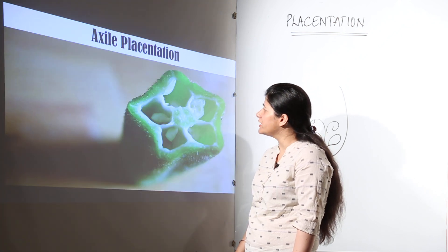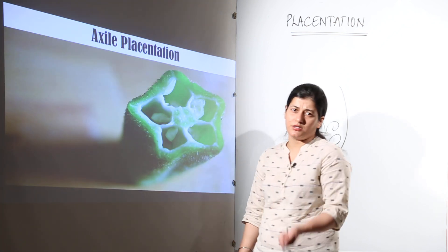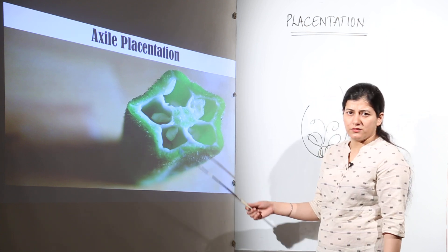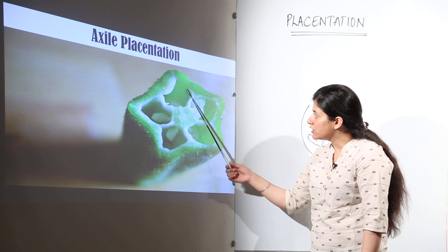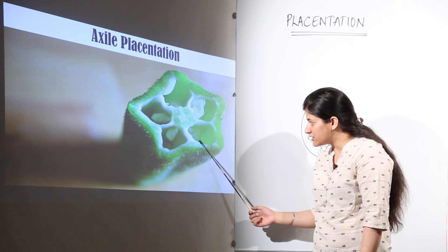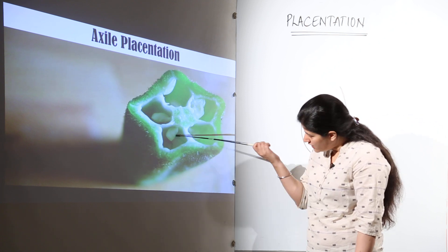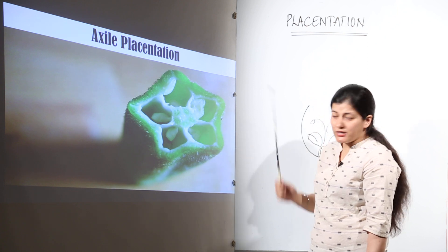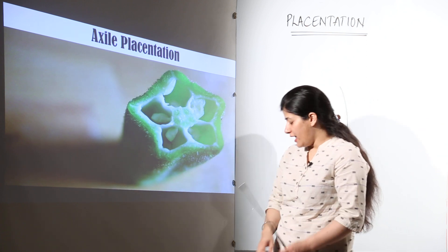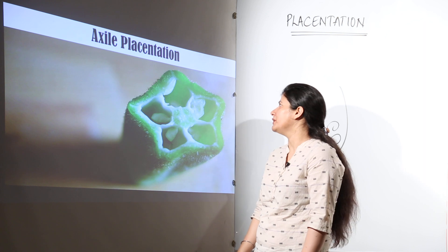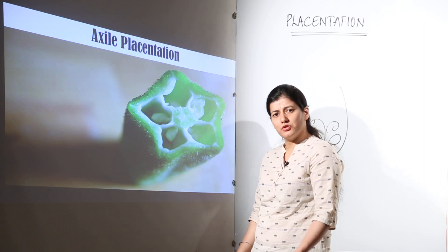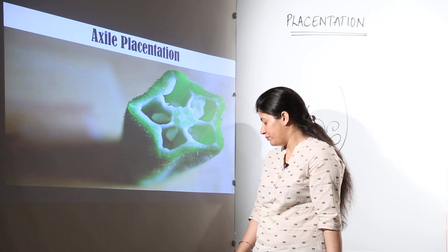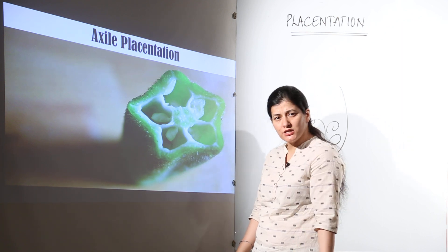The next one is axile placentation. This is related to food — this is ladyfinger or okra. You see the septa present, and in the central part, attached to the central axis, lie the ovules. This is axile placentation. Many citrus fruits also belong to this category of placentation.